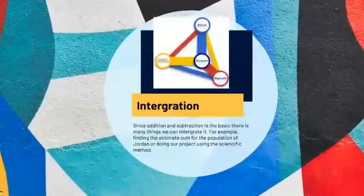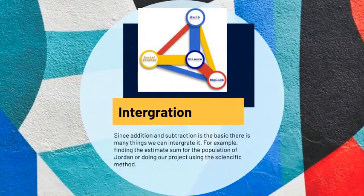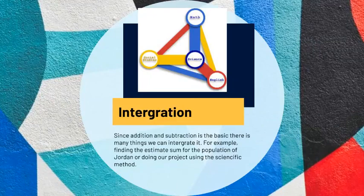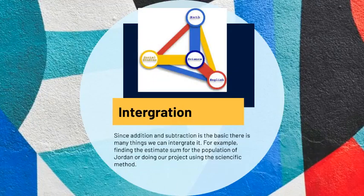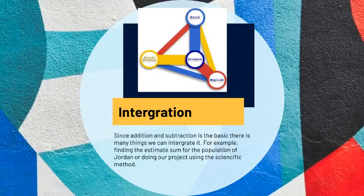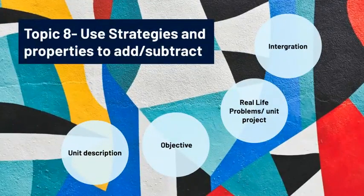Now let's see how this integrates with other subjects. Integration means when we can use all four subjects on one topic. For example, how can we use addition, subtraction, or rounding in science, social studies, and English? Since addition and subtraction is foundational, there are many things you can integrate it with. For example, if I say find the sum of the population in Jordan, you're going to use the scientific method for that. Or if I ask how many steps you walk in school, you're not going to tell me exactly 446 — you're going to give me a rounded number. We could also use our vocabulary words and write a paragraph about it. Addition, subtraction, and rounding integrate with all subjects, and it's very interesting.